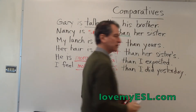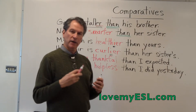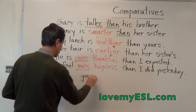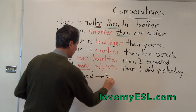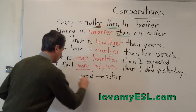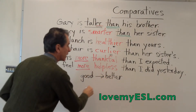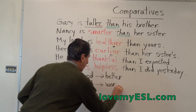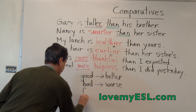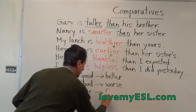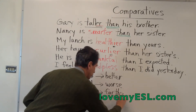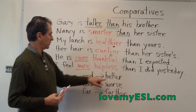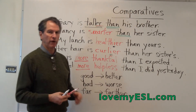Now there are some irregular adjectives. 'Good' becomes 'better' — B-E-T-T-E-R. Good becomes better. And 'bad' becomes 'worse' — W-O-R-S-E. And the word 'far,' which is about distance, becomes 'farther' — F-A-R-T-H-E-R. There's that extra TH in the word. These words you just have to learn: good, better, bad, worse, far, farther.